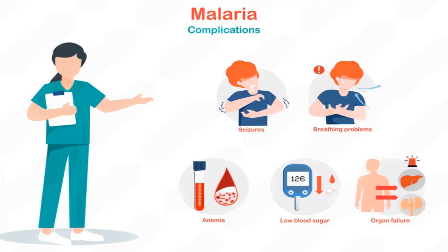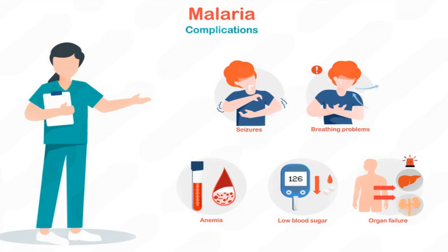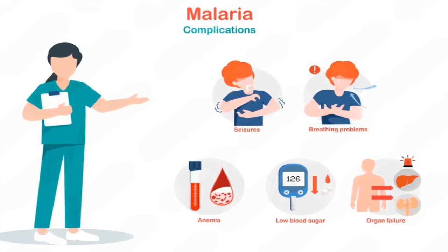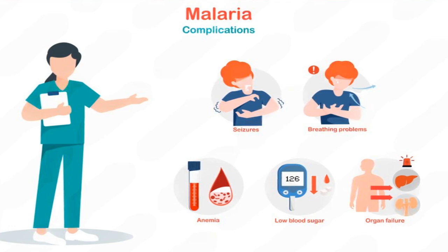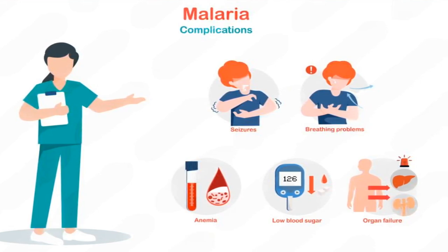Number 11. What are the complications of severe malaria? Severe malaria can lead to life-threatening complications, including cerebral malaria, brain damage, severe anemia due to red blood cell destruction, organ failure of the liver, kidneys, or lungs, hypoglycemia, and respiratory distress. If untreated, these complications can result in permanent damage or death. Early diagnosis and treatment are crucial to prevent such outcomes.